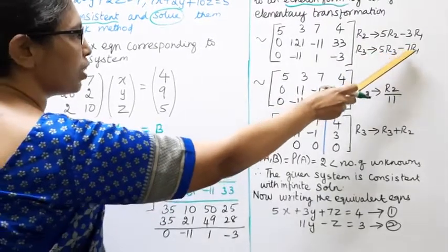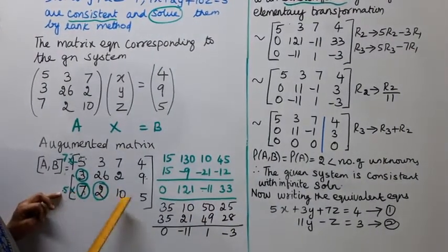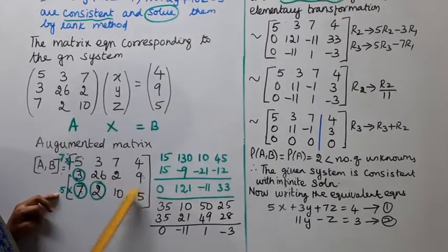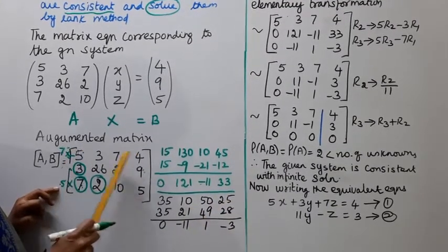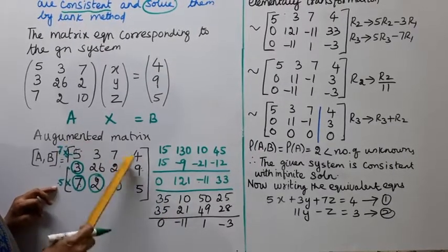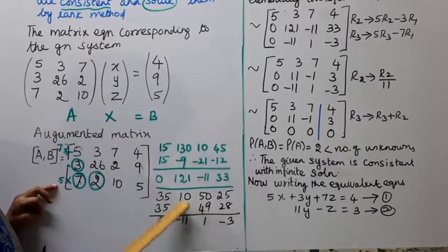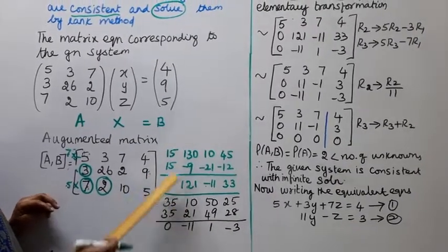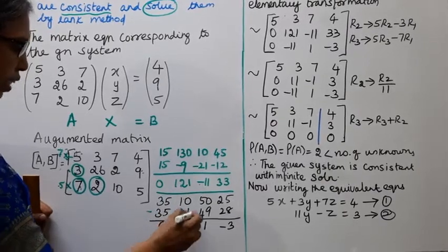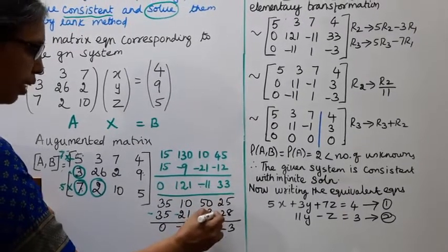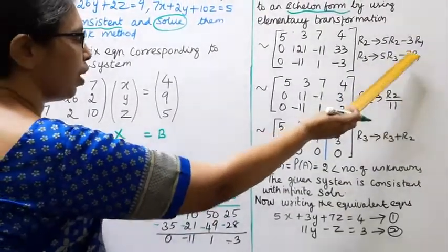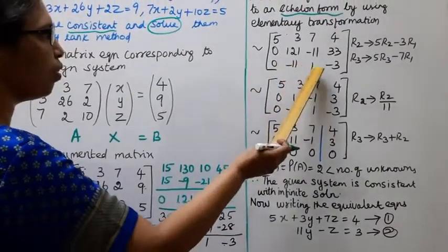Applying R3 → 5R3 − 7R1: 5 times R3 gives 35, 10, 50, 25. Subtracting 7 times R1 (35, 21, 49, 28) gives 0, −11, 1, −3. So R3 becomes [0, −11, 1, −3].